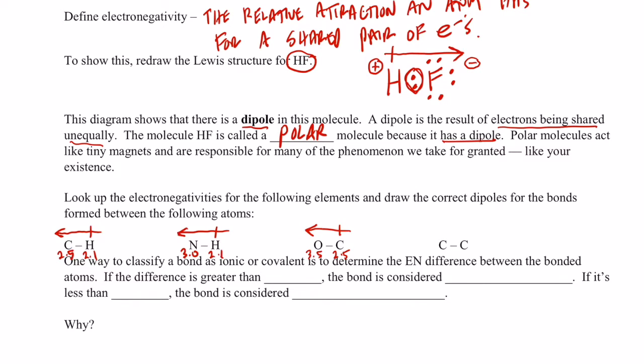Now, what if we have atoms of the same element bonded to each other? Well, since the electronegativity of carbon is 2.5 and the bond is between two carbon atoms, there is no dipole here. This would be a non-polar bond because there is no dipole.